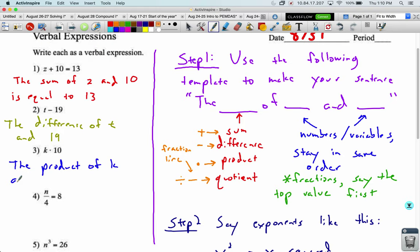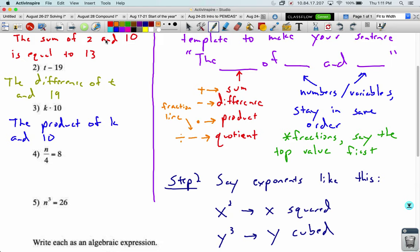Number four. We see a fraction. So we're going to say the top value first, and we're also going to use the word quotient. So number four is the quotient of n and four. Now we see an equal sign. So we could say is equal to eight.